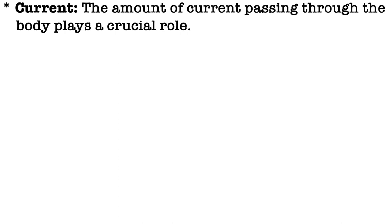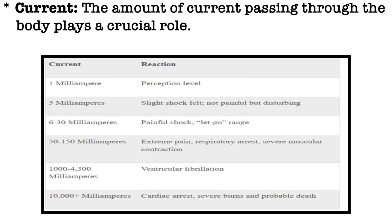Regarding current — the amount of current passing through the body plays a crucial role; higher current is more likely to cause serious harm. At roughly 1 milliampere, the effect is perception level only. At around 5 milliamperes, there is a slight shock felt — not painful but disturbing. At 6 to 30 milliamperes, there is a painful shock. At 50 to 150 milliamperes, extensive pain is felt. At 1000 to 4300 milliamperes (1 to 4.3 amperes), there are serious effects that may cause death.